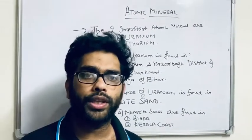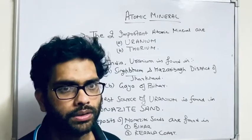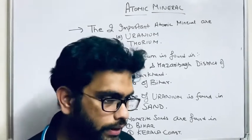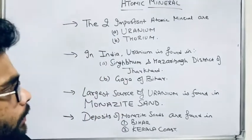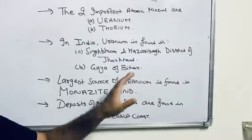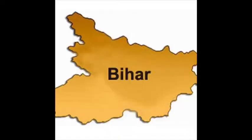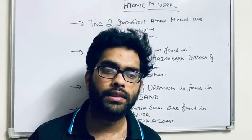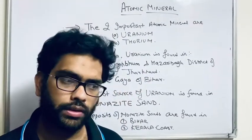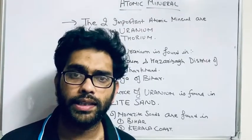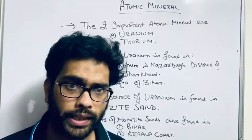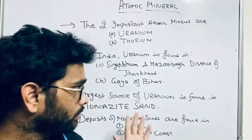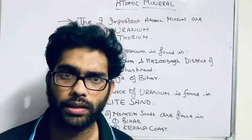We are talking about uranium right now; in the next lecture we will discuss thorium. Uranium is also found near Jharkhand in the neighboring state Bihar. Inside Bihar, one very important place is Gaya. Gaya is a historically significant place for Buddhism, as you can read in history. Keep the place Gaya in mind as an important uranium location.